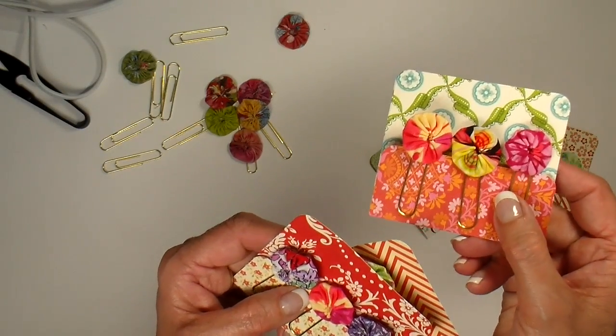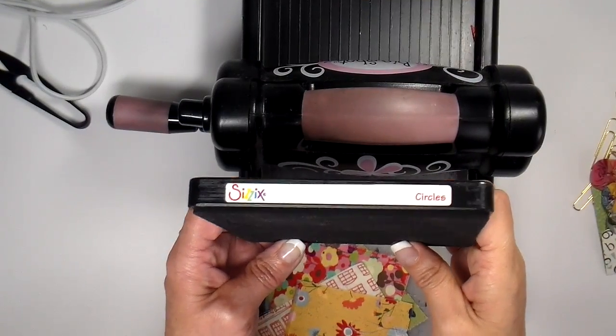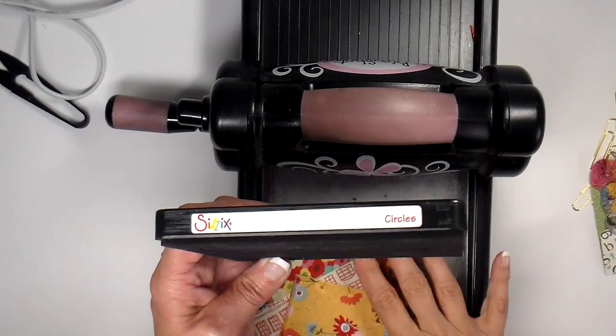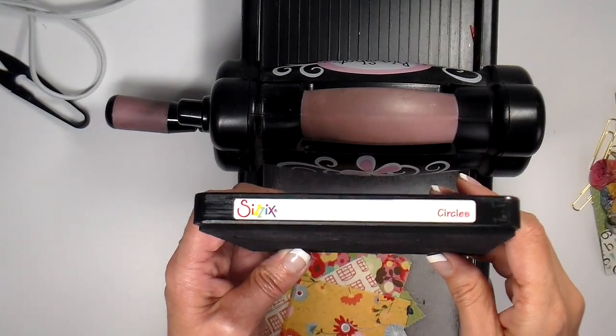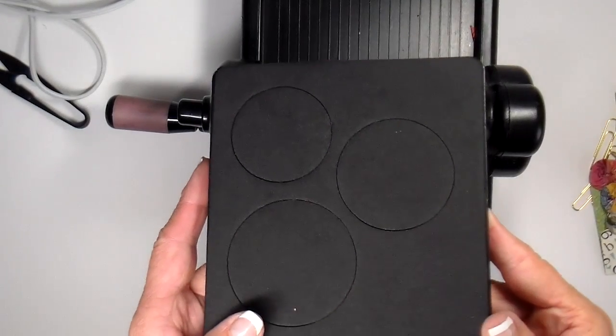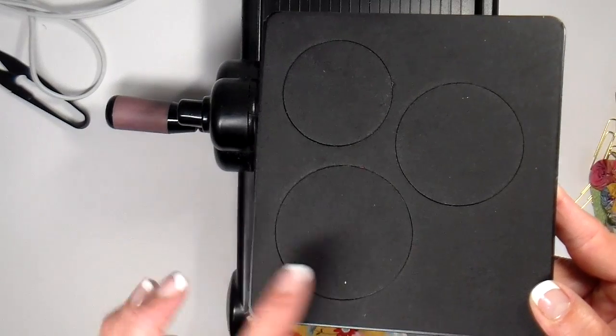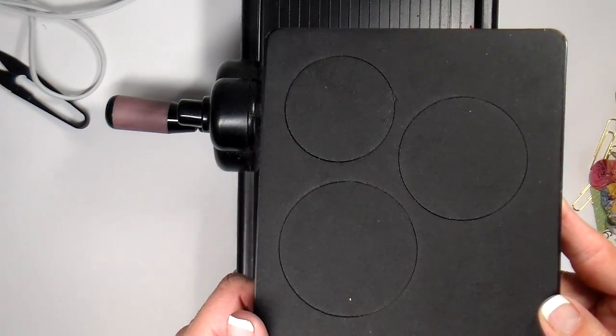It's all in the details. I cut my circles using my Sizzix Big Shot. I'm using the circles die - they have several circles dies, this one has three circles on it - and I'm using the largest one which is about two and a half inches across.